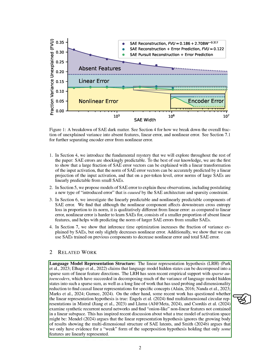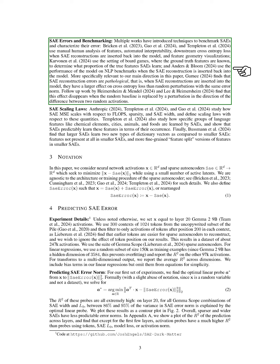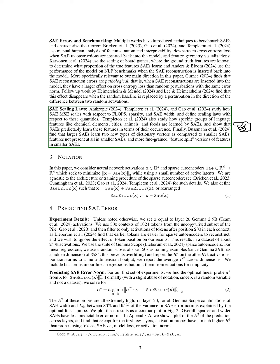We then discuss related work, starting with the Linear Representation Hypothesis, LRH, which suggests that language model hidden states can be expressed as a sparse sum of linear features. Recent studies have supported this idea, but some have raised questions about its validity, finding more complex multidimensional structures in certain models. We also review techniques for benchmarking SAEs and characterizing their errors, noting that SAE reconstruction errors can significantly impact model performance compared to random perturbations. We examine how SAE error scales with different factors, revealing that larger SAEs learn additional types of features compared to smaller ones.